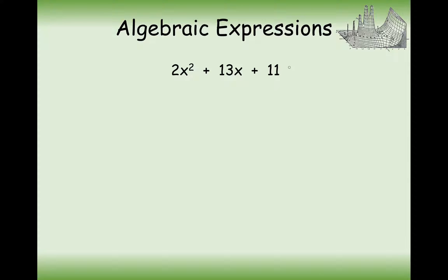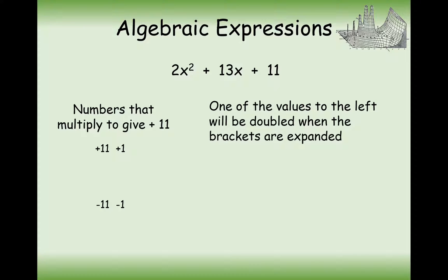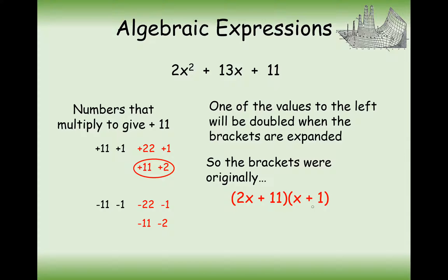Let's have another go. We're timesing to make 11, but one of those numbers is going to have to be doubled, and then add together to make 13. What two pairs of numbers times together to make 11? Well, 11 and 1, or minus 11 and minus 1. Thinking about which number will be doubled and then add together to make 13 — in this case it's going to be the 11 and the 2. The 1 needs to go in the opposite bracket to the 2x so these can times together, and then 11x multiplies here. So we get 13x out of these two expansions, which is just what we want.